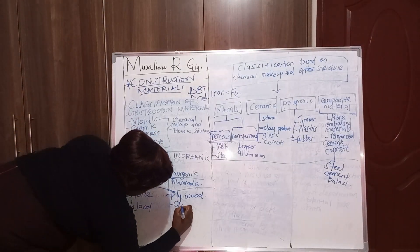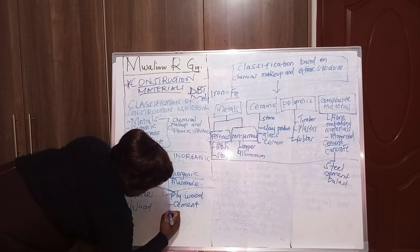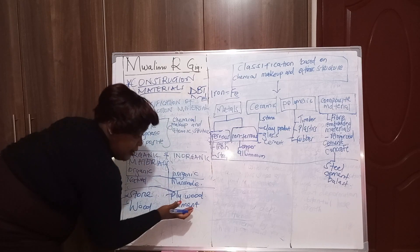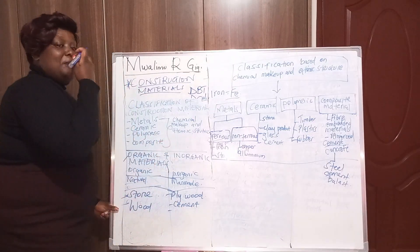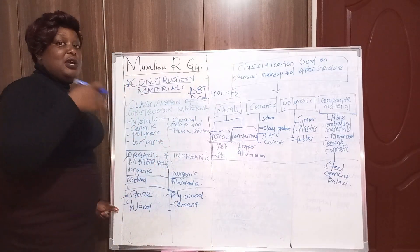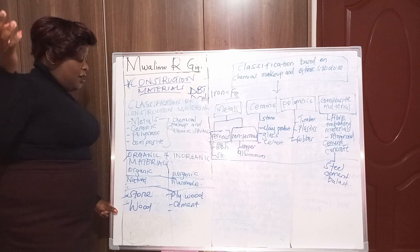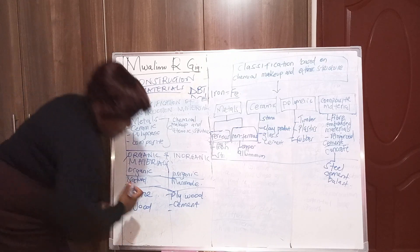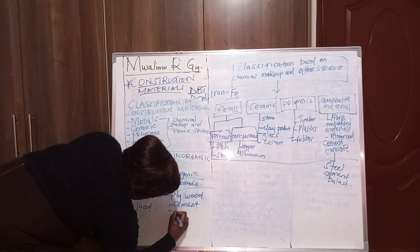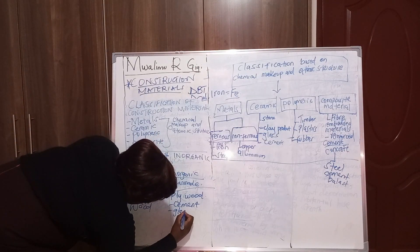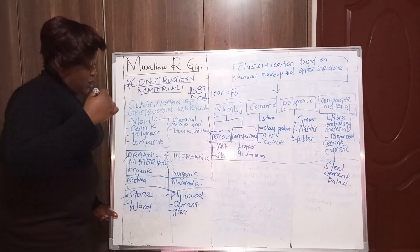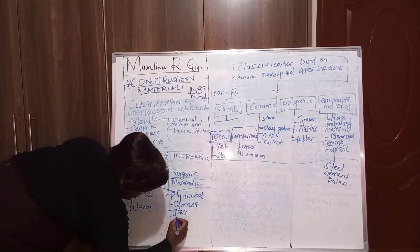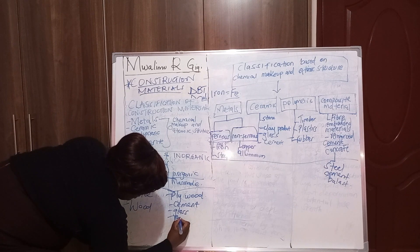Another inorganic example is cement — this is man-made, we have factories for making cement. We also have glass, with companies that manufacture glass, and we have paint.